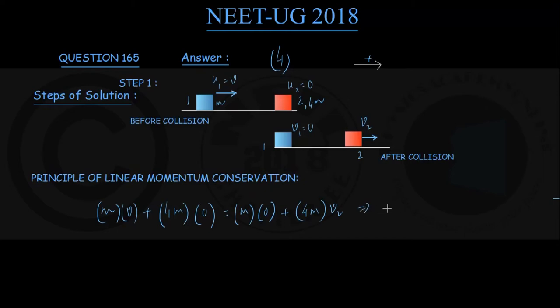We have got mv is equal to 4m times v2. m's cancelling out, and we have got that the velocity v2 of block number 2 after the collision is v by 4, where v is the velocity of block number 1 before collision.